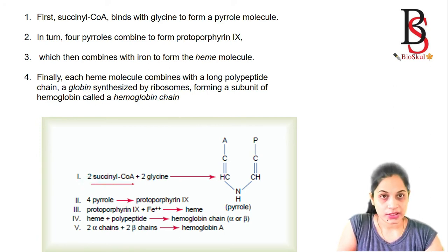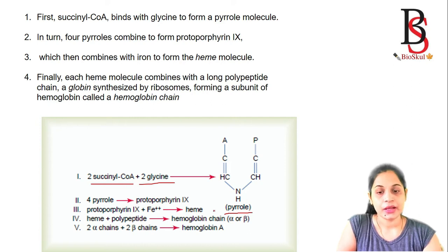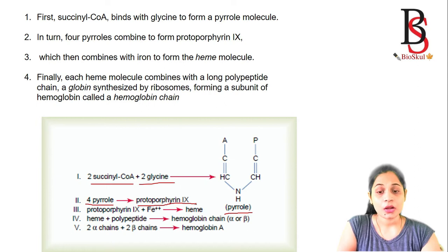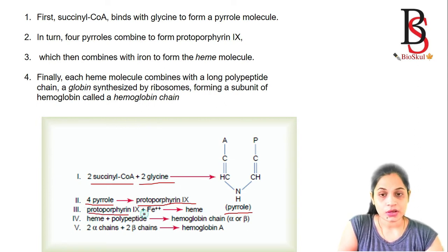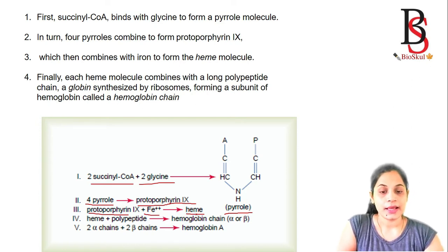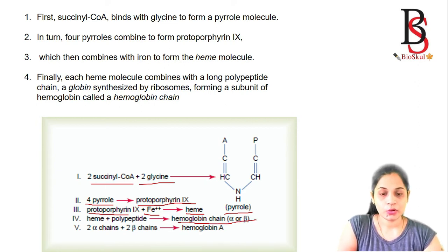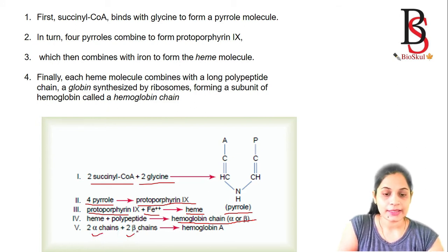Hemoglobin synthesis begins when two succinyl CoA combine with two glycine to form the pyrrole ring. In turn, four pyrrole rings combine to form protoporphyrin IX. Protoporphyrin IX then combines with iron to form heme.